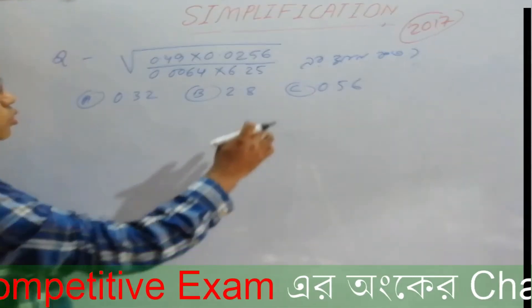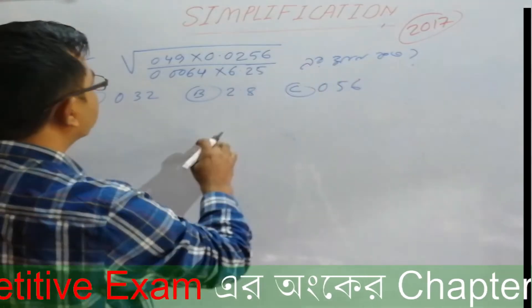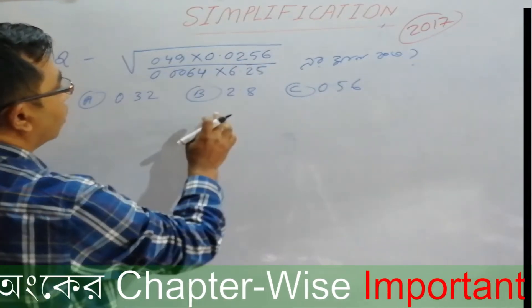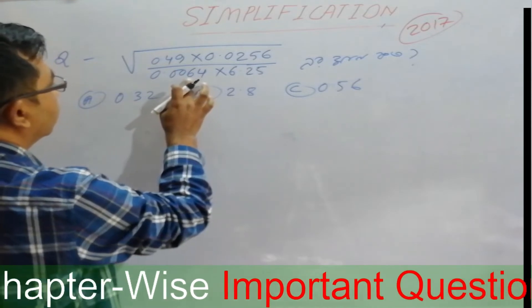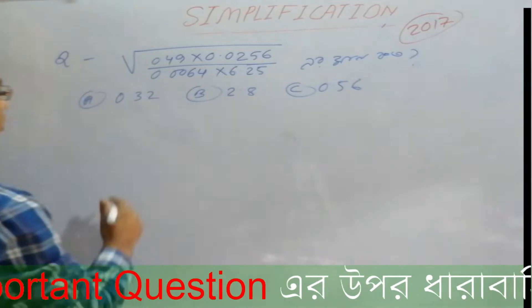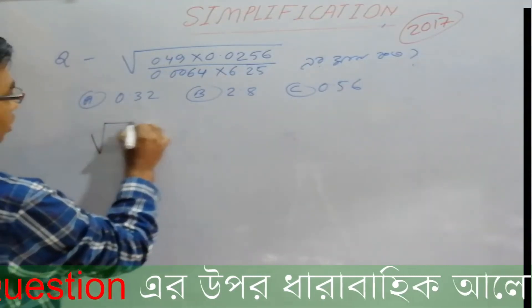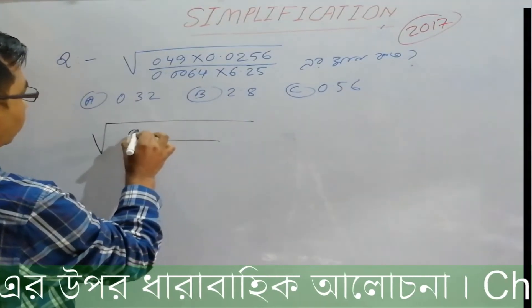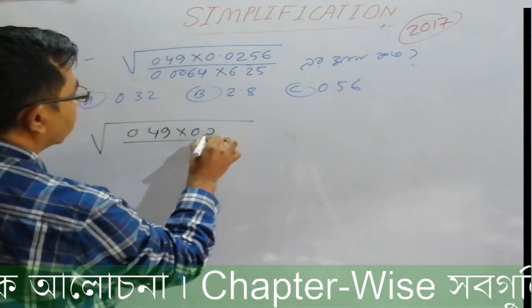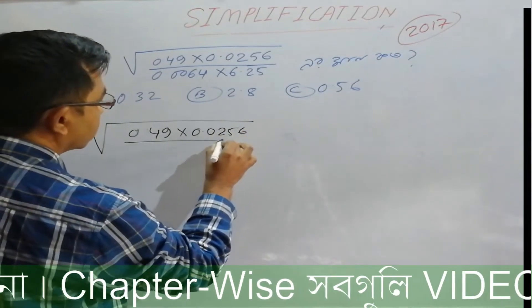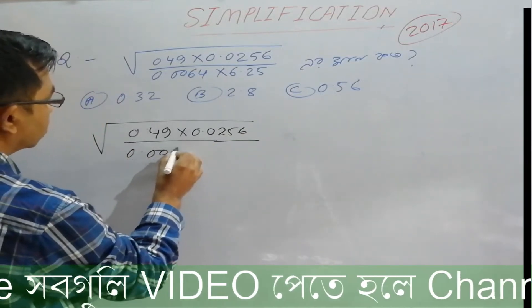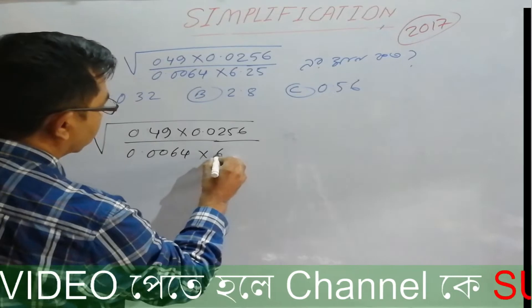We are given the expression: root over 0.49 multiplied by root over 0.256, divided by root over 0.0064 multiplied by root over 625. Let us evaluate what is 0.49 × 0.0064 and 0.256 × 625 step by step.